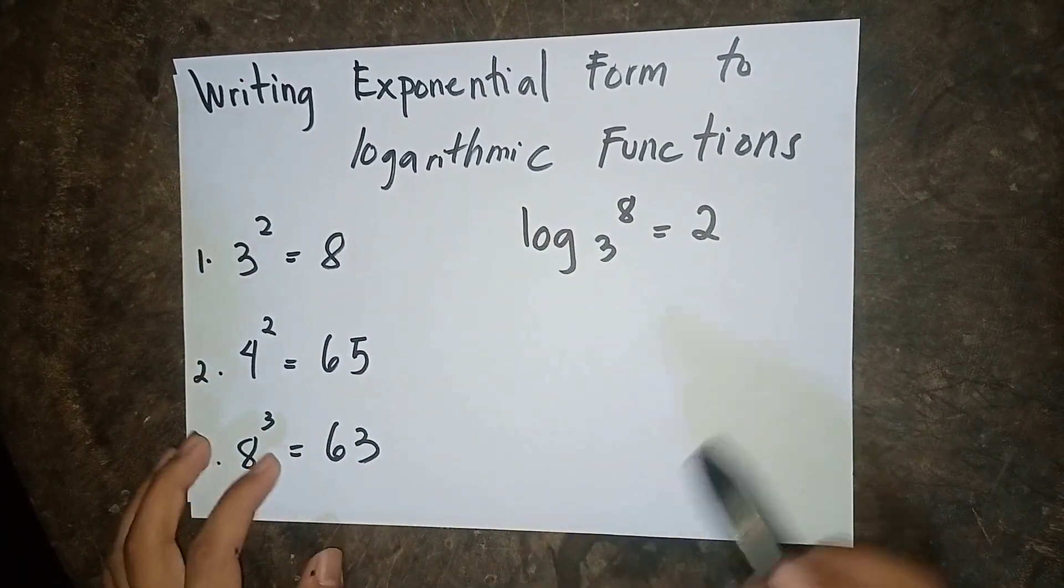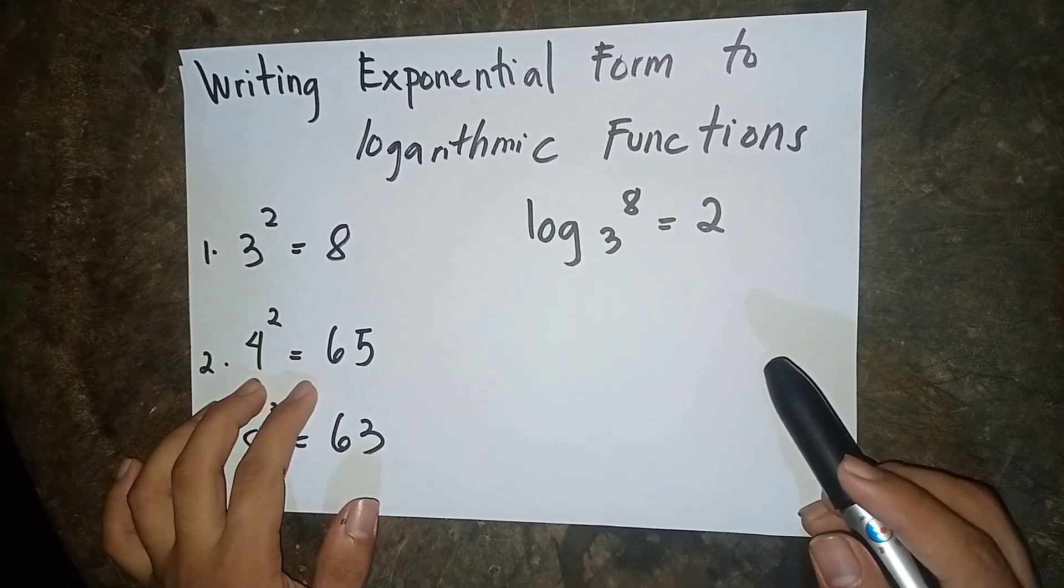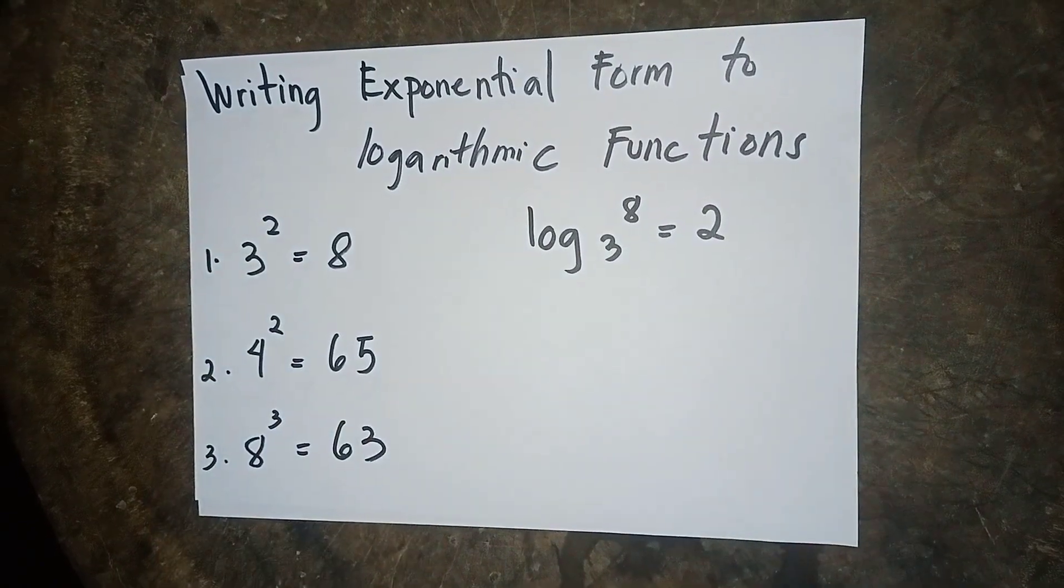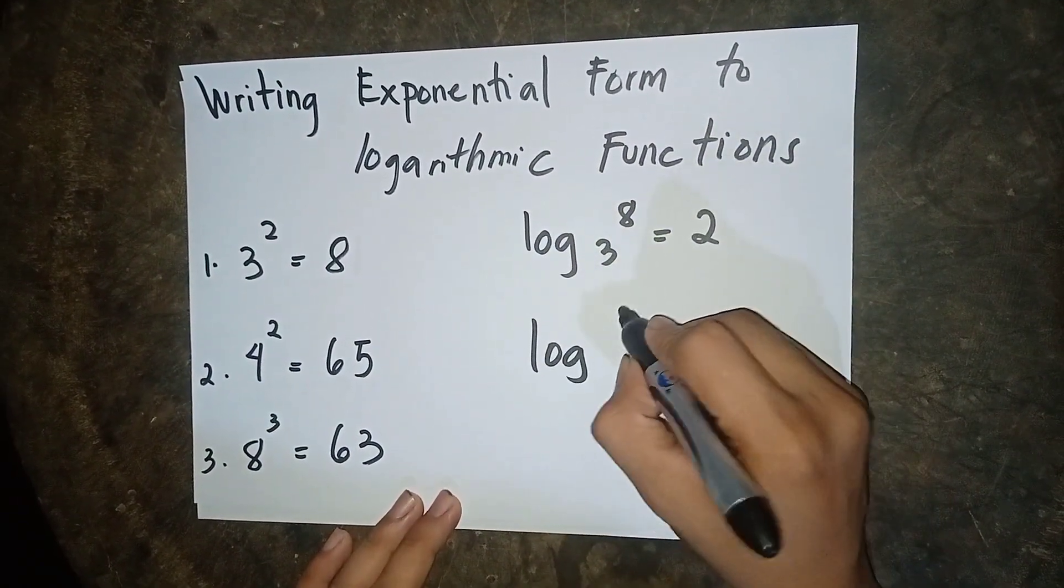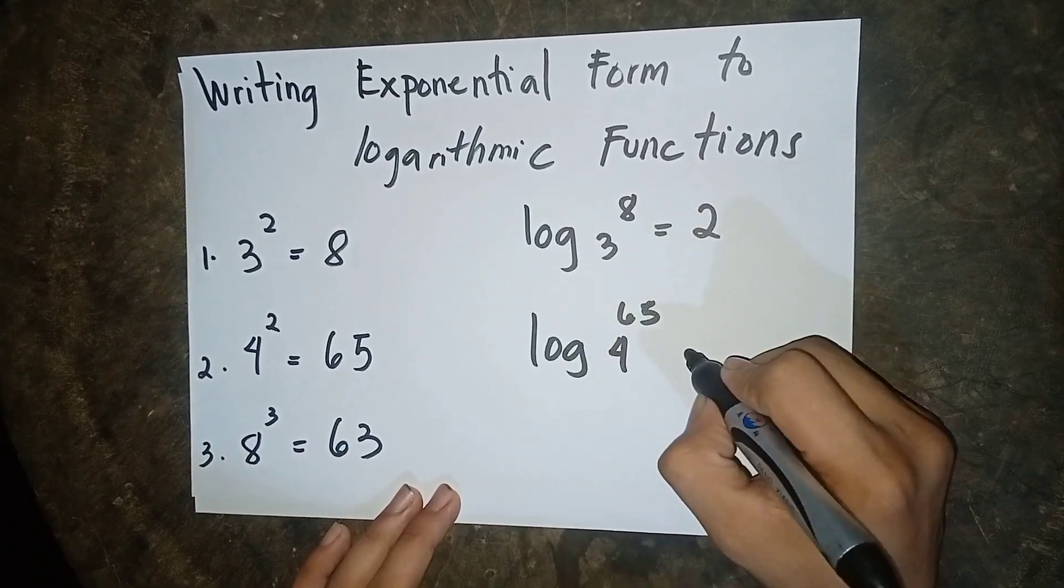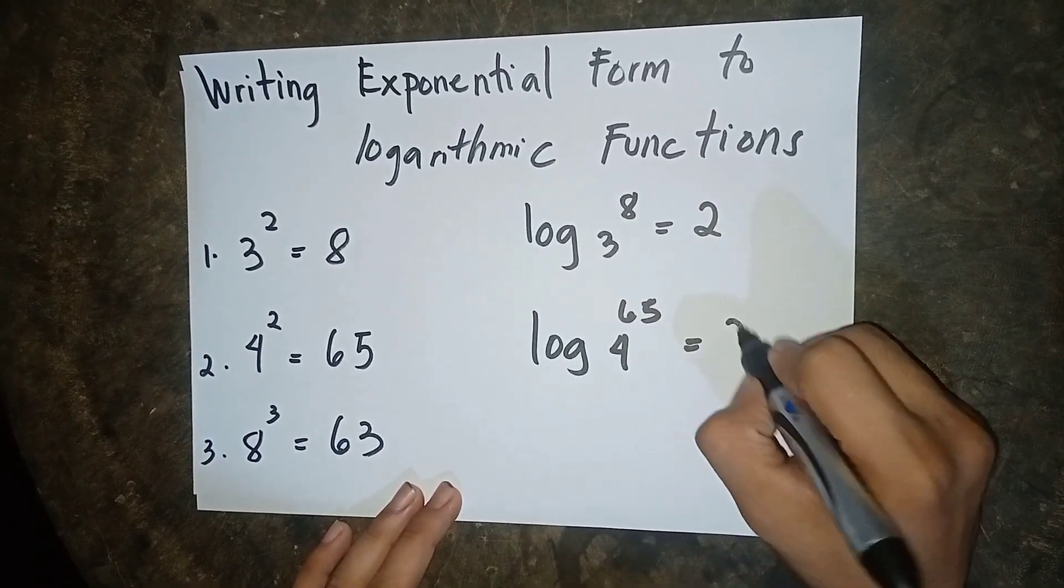Number 2 is 4 to the power of 2 is equal to 65. So our answer is log 65 base of 4 is equal to 2.